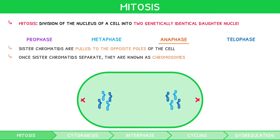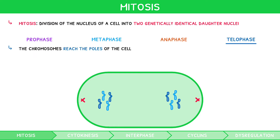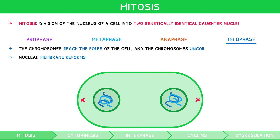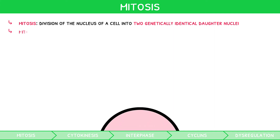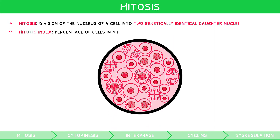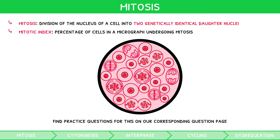Once sister chromatids separate, they are known as chromosomes themselves. During telophase, the chromosomes reach the poles of the cell, then uncoil, and finally the nuclear membrane reforms. Therefore, the result of mitosis is the generation of two genetically identical daughter nuclei. It is very important that you do not write 'genetically identical cells' — this is a common mistake. The IB also expects you to identify mitotic stages on a micrograph and calculate the mitotic index, which is the percentage of cells undergoing mitosis.